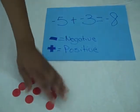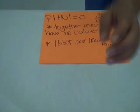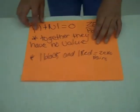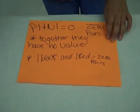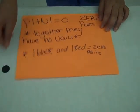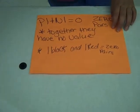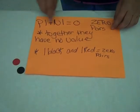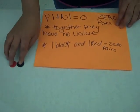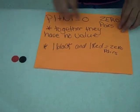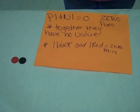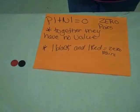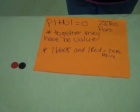Let's do this one. Positive one plus negative one equals zero. Because a negative one and a positive one equal a pair together — together they don't have any value.